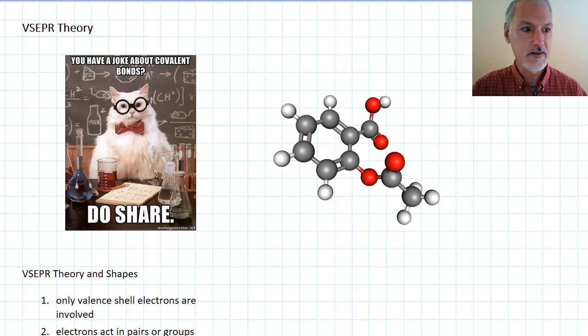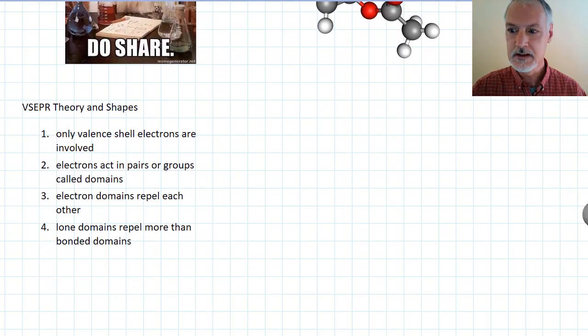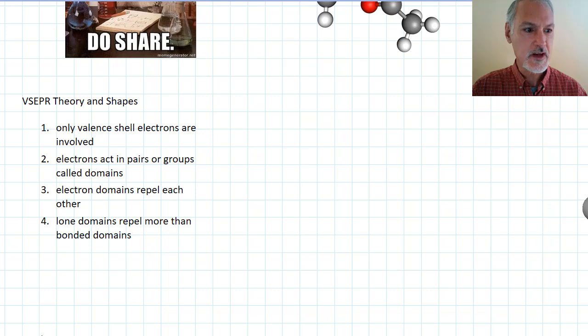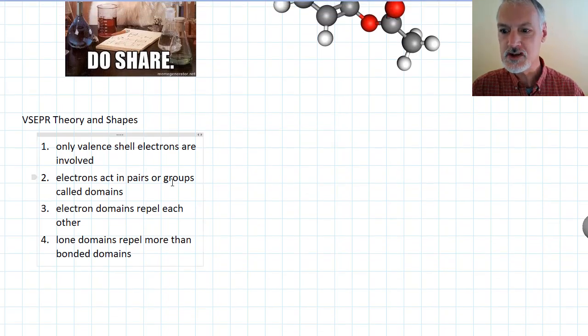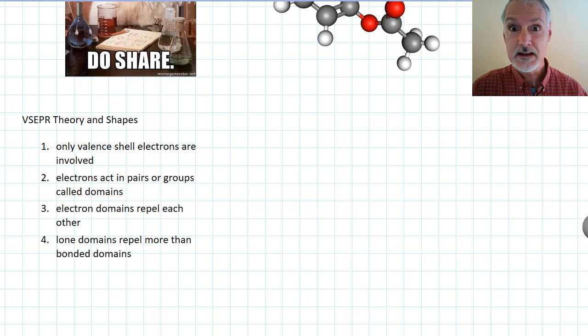Well, that theory is called the VSEPR theory. That VSEPR theory is based upon the idea that only the valence shell electrons are involved. That's why we've been practicing Lewis dot diagrams because they only involve those that are in the valence shell. Here is a Lewis dot diagram for a molecule that we've drawn a bit earlier.